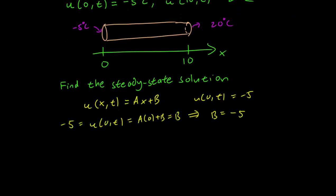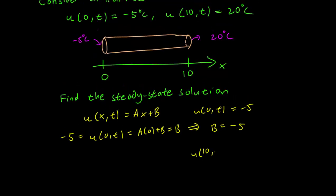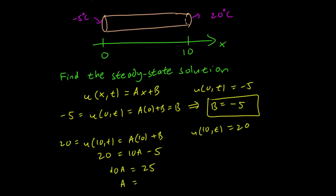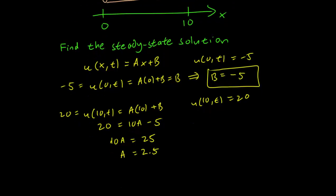Now let's plug in the other boundary condition, u(10,t) equals 20. When we plug that in, we get u(10,t) equals 20, but it's also equal to 10a plus b. So 10a, and we know that b is minus 5. So 10a minus 5 equals 20, which allows us to solve for a. So 10a equals 25, a equals 2.5. This means that our steady state solution is u(x,t) equals 2.5x minus 5.